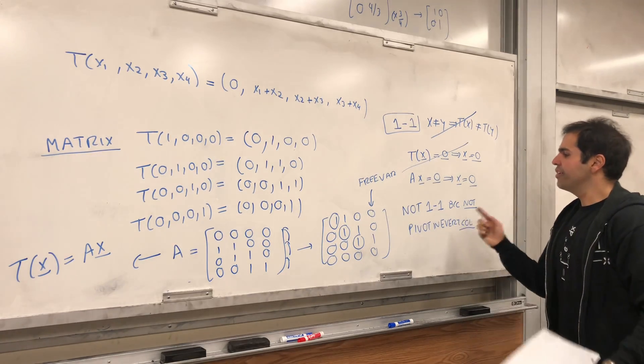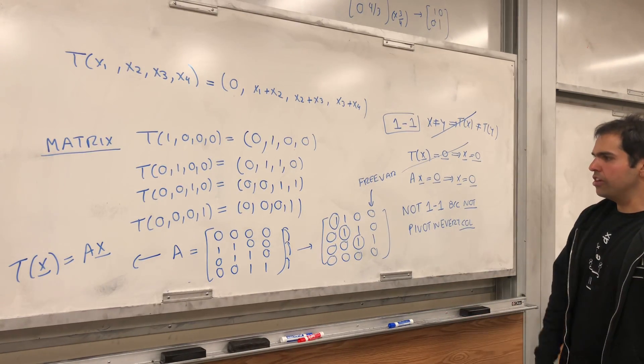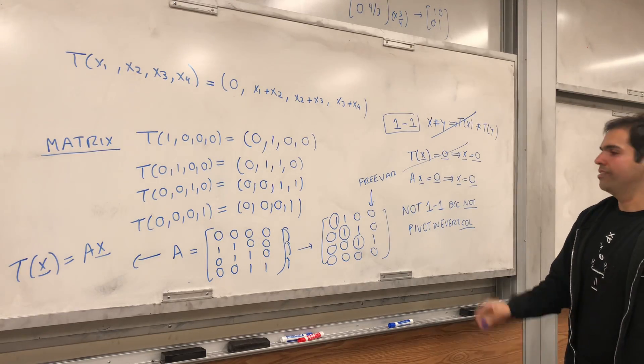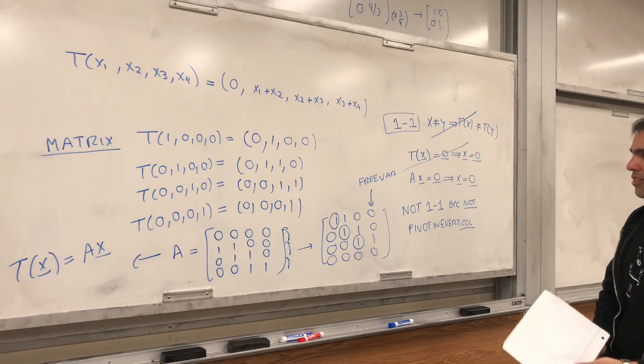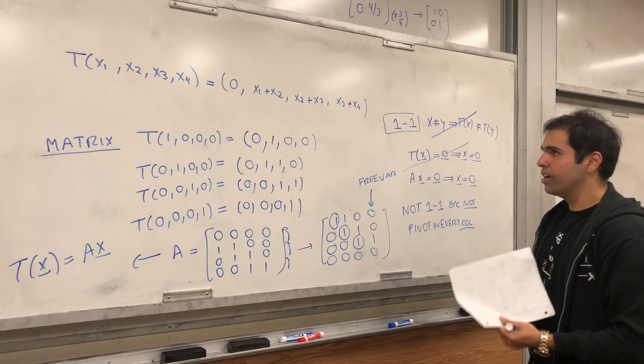So, in particular, it's not one to one, because not a pivot in every column. And in particular, you have to remember, if there's a pivot in every column, then yes, it is one to one. So, this matrix, this transformation is not one to one.